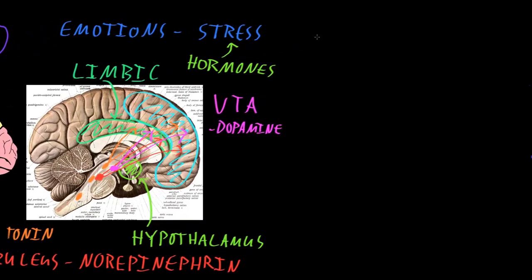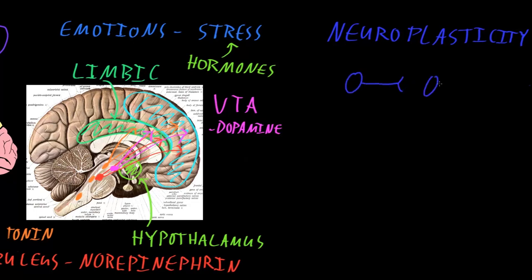A newer idea that is interesting is that there may be abnormalities of what is called neuroplasticity — a term that simply means the brain changes in response to experience. These changes may occur at the level of a connection between a couple of neurons, where the strength or efficiency of information flow from one neuron to the next changes based on experience, or at the level of networks of neurons with widespread connections and pathways. Evidence is accumulating that aspects of neuroplasticity appear to be abnormal in animal models of major depressive disorder, but like other abnormalities found so far, it's unclear if these are a cause or an effect of the disorder.